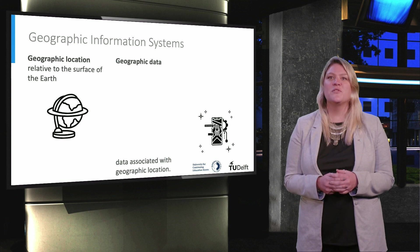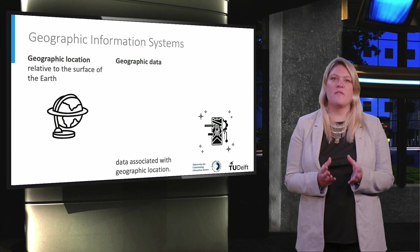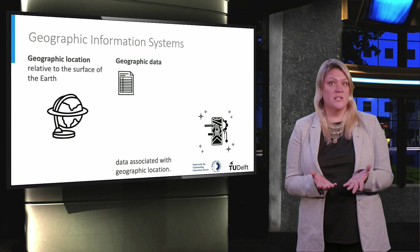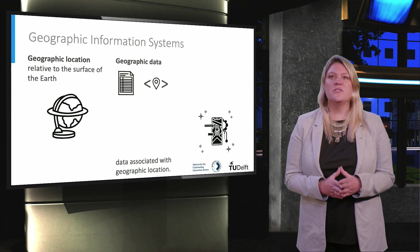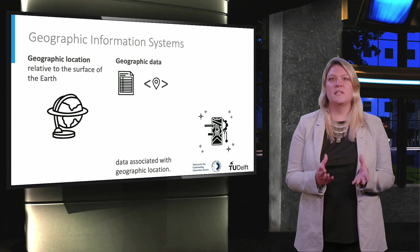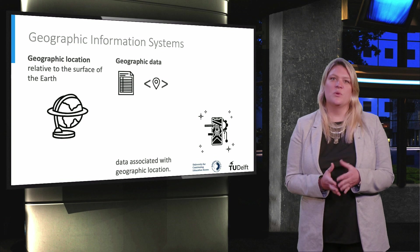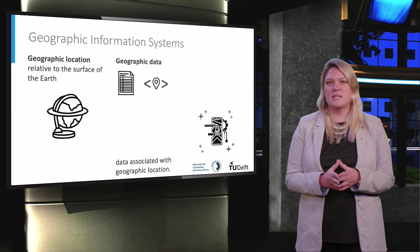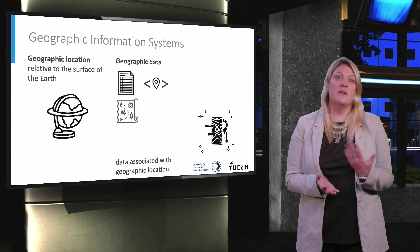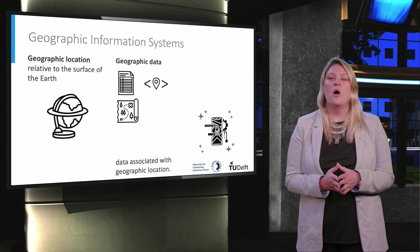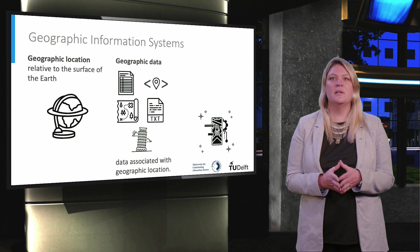Secondly, we have geographic data. It can be all sorts of data that is associated with a geographic location. For example, a spreadsheet with geographic coordinates or addresses, or any data with locational metadata — for example, photos taken by GPS-enabled phones. But we can also consider cases where geographic information is only implicitly represented in the data and must be analyzed to make sense of it, like in the case of an image file of a map, or a document with textual location references, or even a photo taken of a landmark.